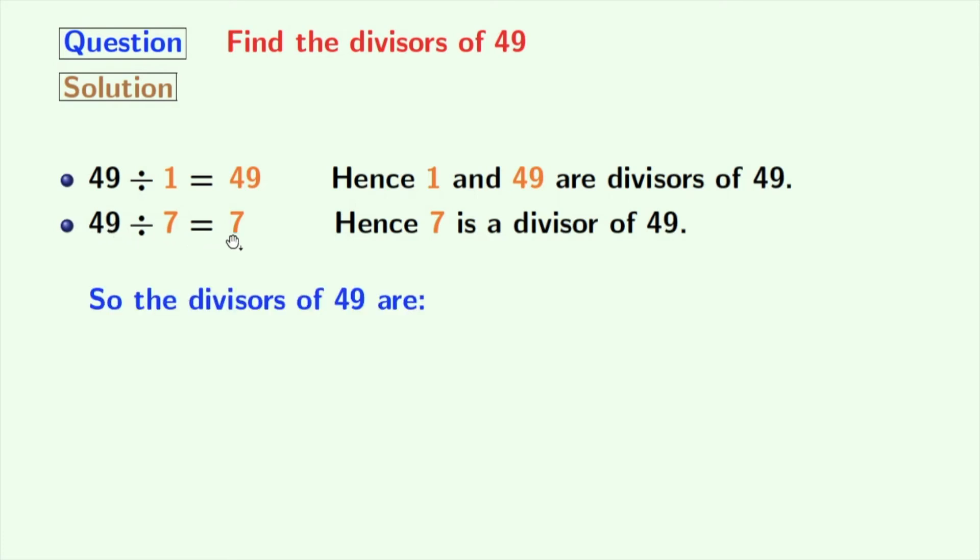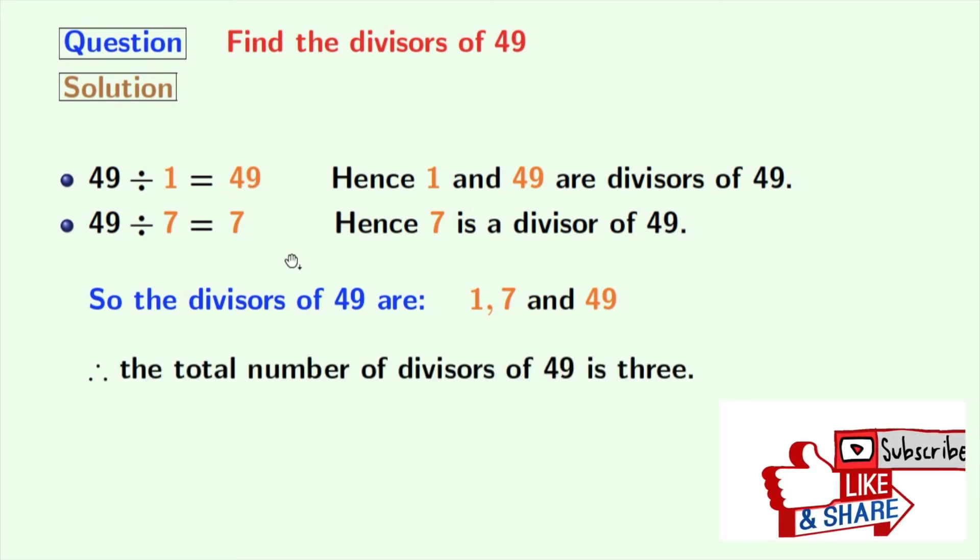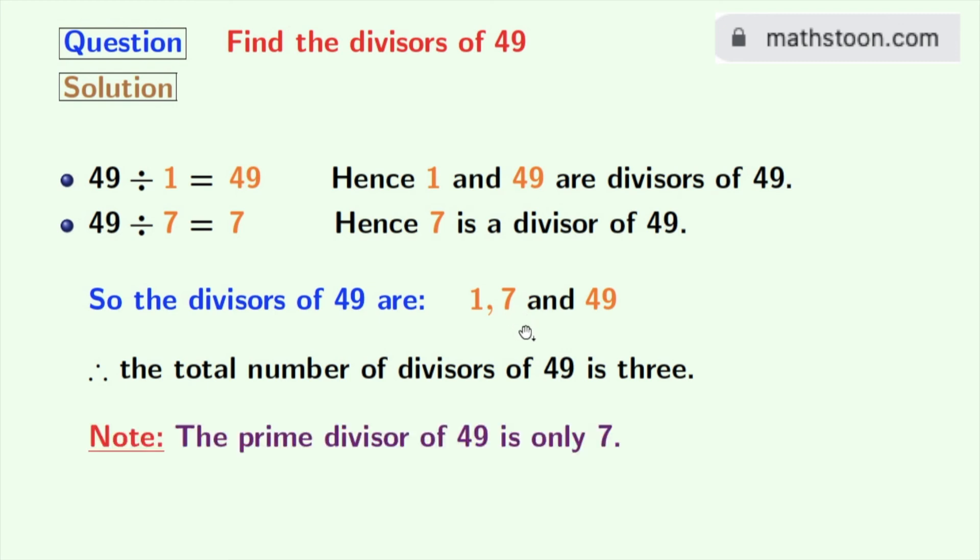Now we have all the divisors of 49 in orange. These numbers are 1, 7, and 49. So the total number of divisors of 49 is 3. Now among these divisors, 7 is a prime number because 7 is divisible only by 1 and 7 itself. So we can say that the prime divisor of 49 is only 7.